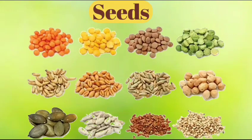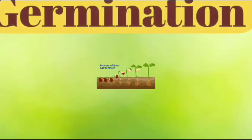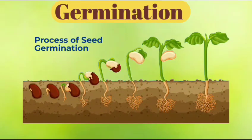Seeds. Seeds are of different shapes, sizes and colors. We eat seeds of plants such as wheat, gram, corn, rice and beans. Such seeds are called edible seeds. The process by which a seed grows into a new plant is called germination.